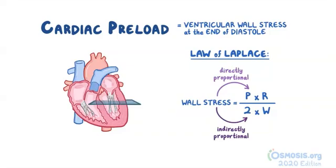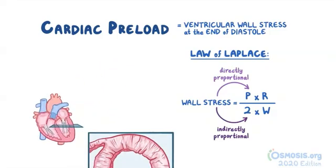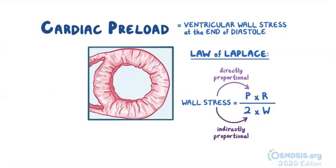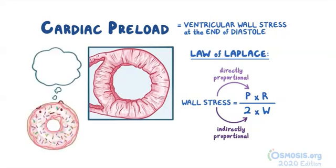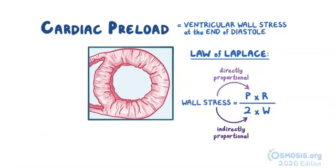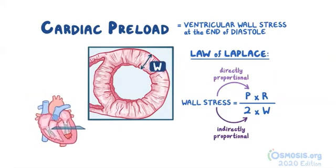To visualize this, let's look at a cross-section of the left ventricle, which looks a bit like a doughnut — a diet doughnut with little dough. The dough circle represents the ventricular wall, and its thickness is the ventricular wall thickness, or w. Pressure (p) is determined by the volume of blood inside the ventricle at the end of diastole. The radius is the distance from the center of the ventricle to the outer edge.